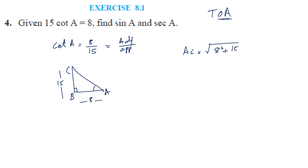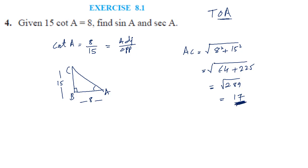AC equals under root of 8 squared plus 15 squared. That's 64 plus 225, which gives 289, and the square root of 289 is 17. Remember, 17 squared is 289. Also remember the triplet 8, 15, 17 — add this to your list of important Pythagorean triplets.